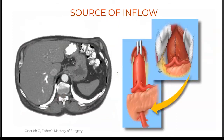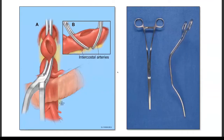We were very fond of using the supraceliac aorta for source of inflow because it is often spared from calcifications and provides an excellent antegrade source of inflow. Dr. Ken Cherry — one of the staff at Mayo — designed the Cherry clamp, and for years he gave the graduating fellows this clamp. He highlighted a few technical points that are sometimes not in the textbooks but are actually very important.